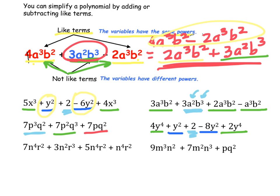For 7n to the fourth r squared plus 3n squared r cubed plus 5n to the fourth r squared plus n to the fourth r cubed: 7n to the fourth r squared and 5n to the fourth r squared are like terms, and 3n squared r cubed has no like term. For 9n cubed m squared plus 7n squared m cubed plus pq squared: none of those share like terms with each other, so those are all unlike terms in that expression.